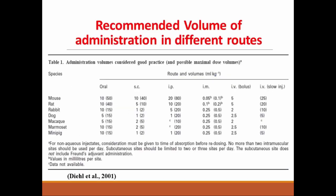This table shows the recommended volume of administration in different routes. For example, the recommended volume administered by oral route is 10 ml per kg in rat and mouse. In intraperitoneal route, the recommended volume in rat is 10 ml per kg. While in intravenous, 5 ml per kg in both rat and mice.